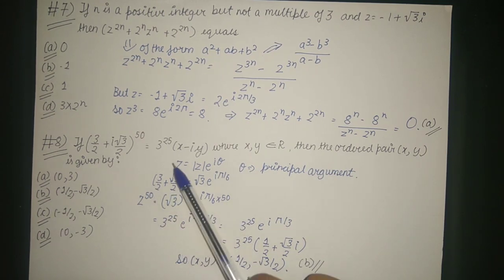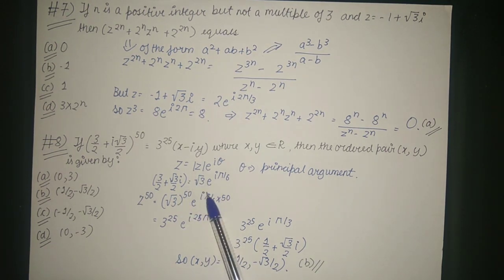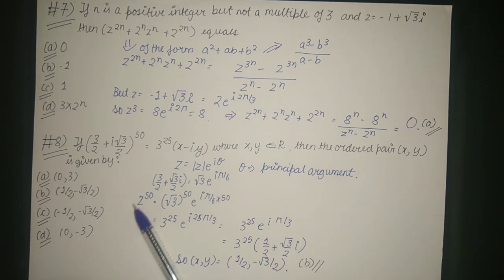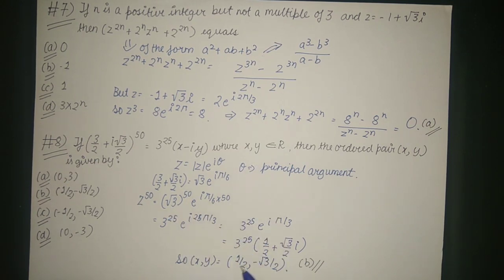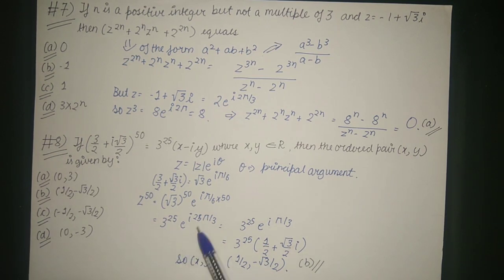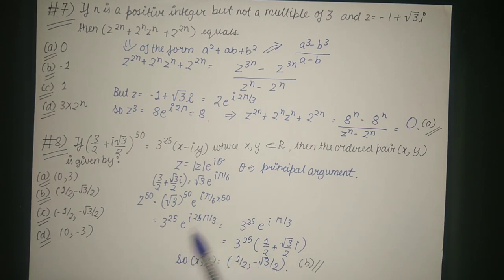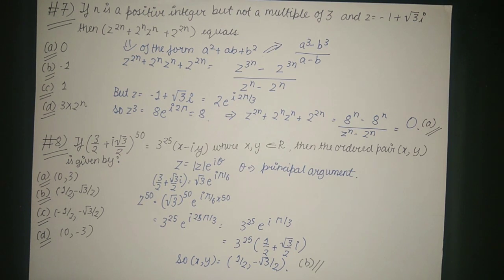We write 3/2 + (√3/2)·i as √3·e^(iπ/6), where √3 is the modulus and π/6 is the principal argument. So z^50 = (√3)^50·e^(i·π/6·50) = 3^25·e^(i·25π/3). Since 25π/3 - π/3 = 8π, which is a multiple of 2π, we simplify e^(i·25π/3) = e^(iπ/3).